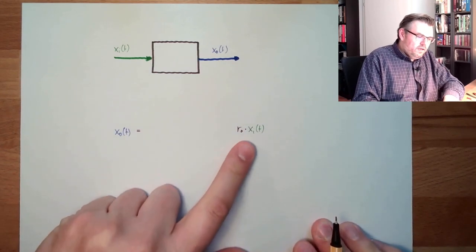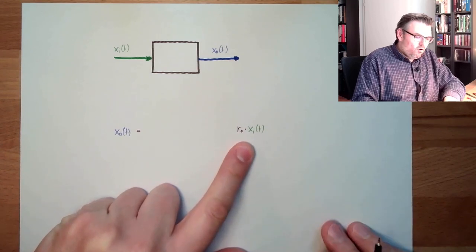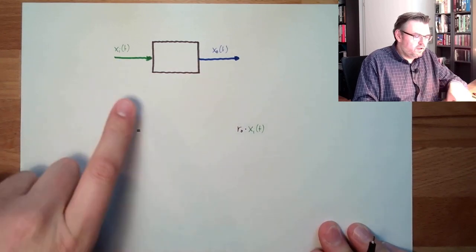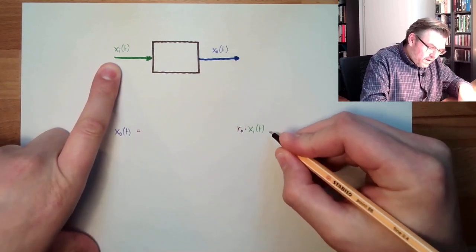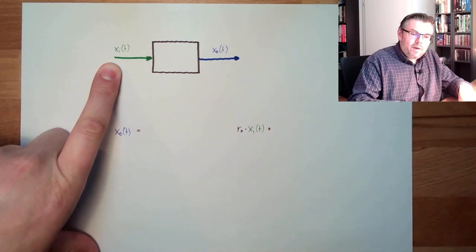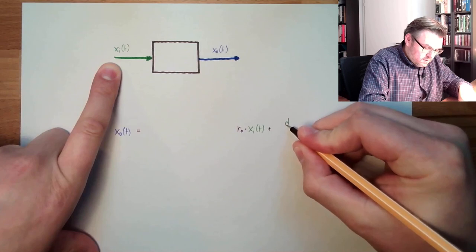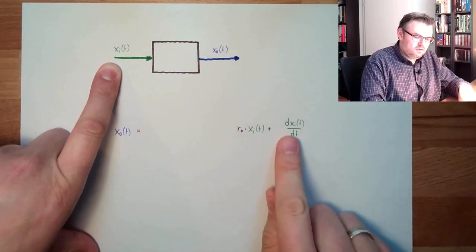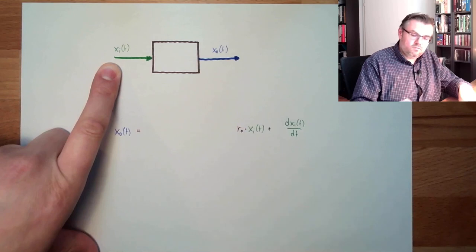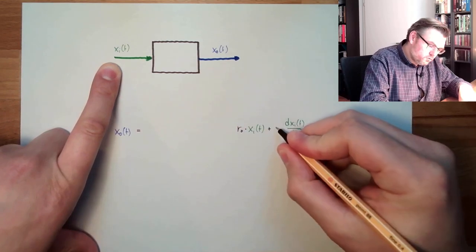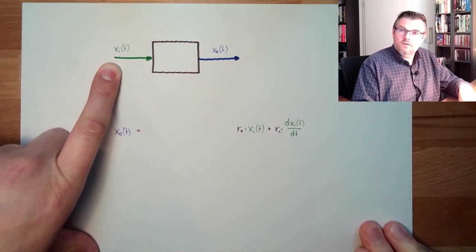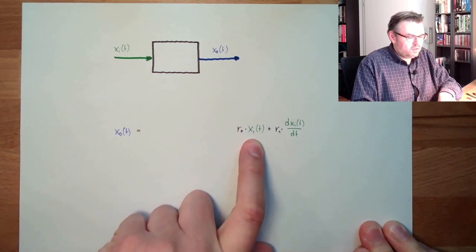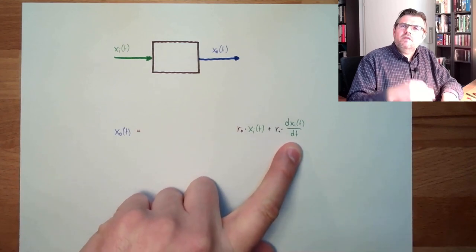But not only the input might have an influence, but also the change rate of the input. If it's changing very fast, the output might be different than if it's changing very slowly. So we are adding not only the input but also the change rate of the input — the derivation to time — dxi divided by dt. And we could also scale this with r1. So: r0 multiplied by input plus r1 multiplied by the change rate of the input.